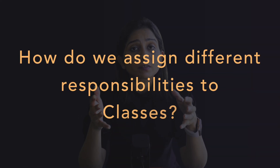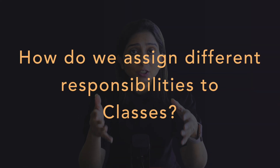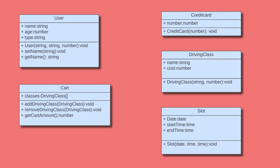Hello and welcome. This is another video in the LLD series. In this video, we are going to talk about how we assign different responsibilities to the classes that we have first designed in the class diagram in the previous video. If you have not checked out the previous video, please go check it out where we have taken a particular use case of a driving school application and drawn the class diagram for that problem.